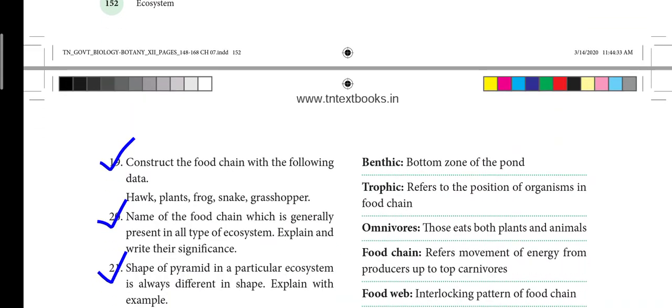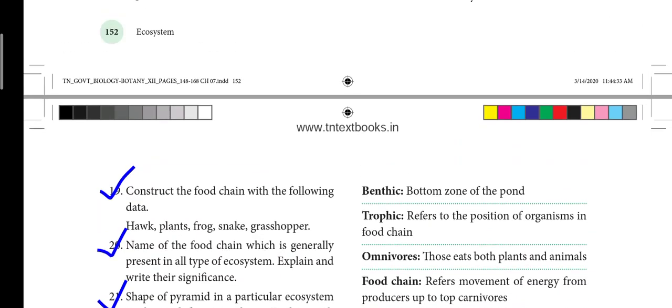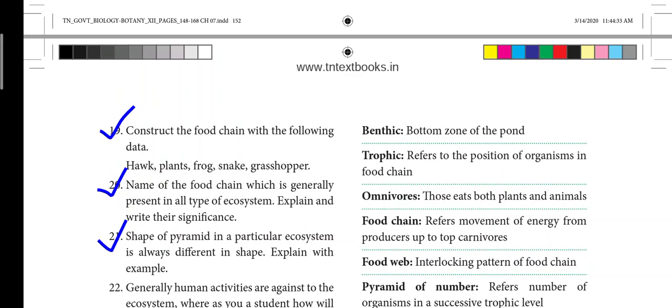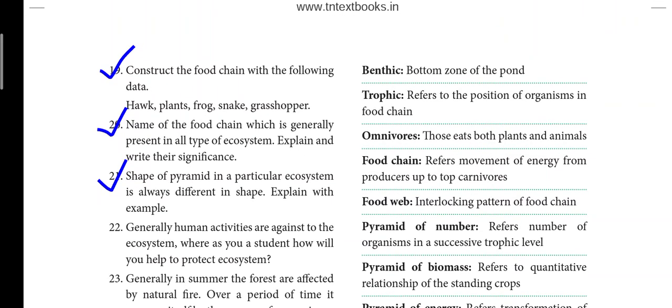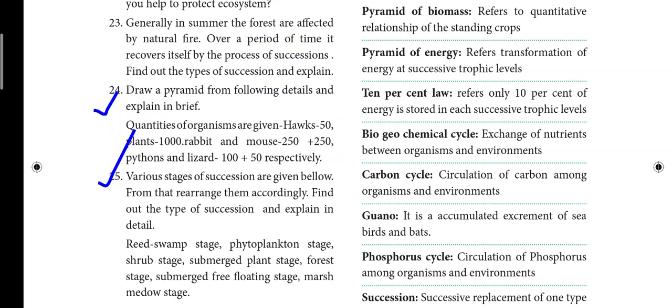Question 18: Construct the food chain. Question 19 and 20: Name the food chain which is found in all ecosystems. Question 21: The shape of a pyramid in a particular ecosystem is always different in shape — explain with examples. Question 24: Draw a pyramid. Question 25: Various stages of succession — explain the types of succession.